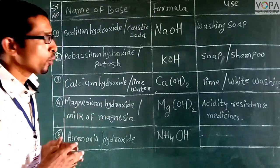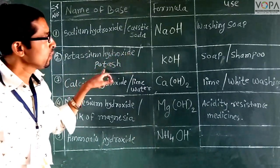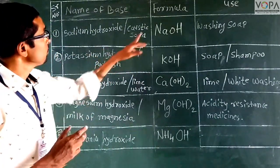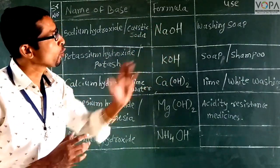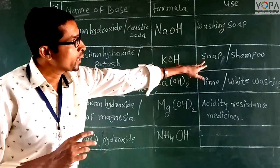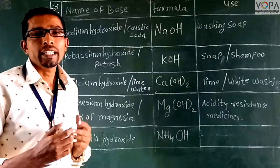Next, potassium hydroxide. The formula of this base is KOH. The uses of potassium hydroxide include soap and shampoo production.